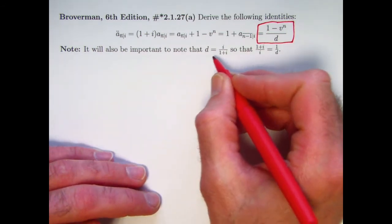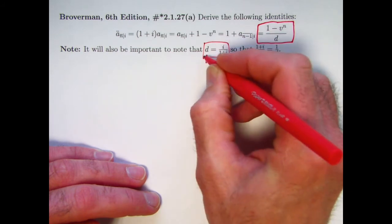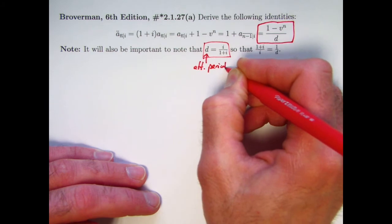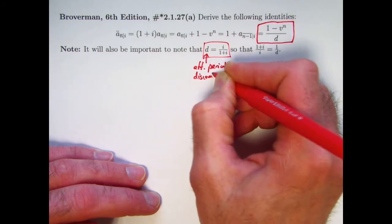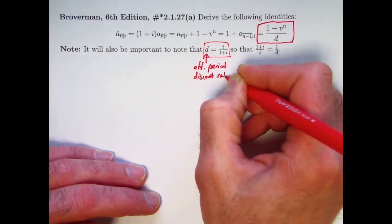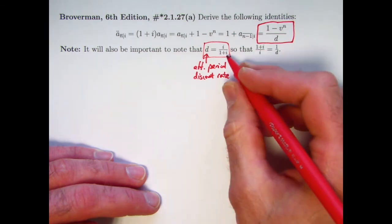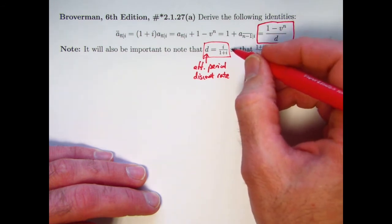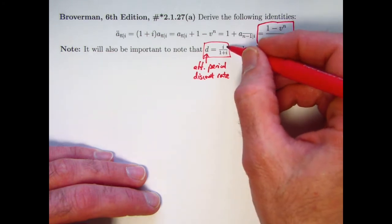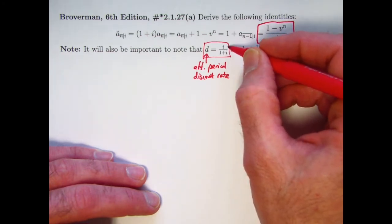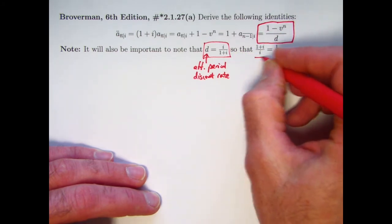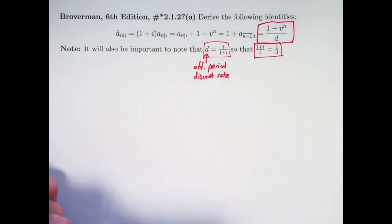Before I start, let me remind you that the value of d — the effective periodic discount rate (and that would be an effective annual discount rate if the period happens to be one year) — is defined as follows: if you deposit 1 in the account at the beginning of the year earning an effective periodic interest rate of i, d is the amount of interest you earn relative to the total ending amount: i over 1 plus i. That means 1 plus i over i equals 1 over d, which will be useful for us.